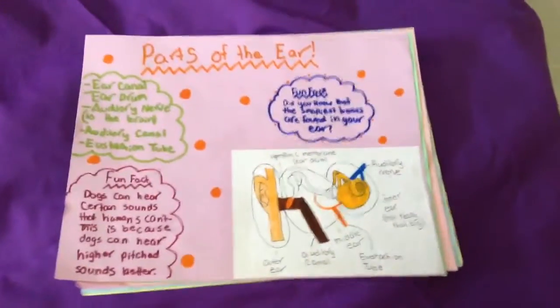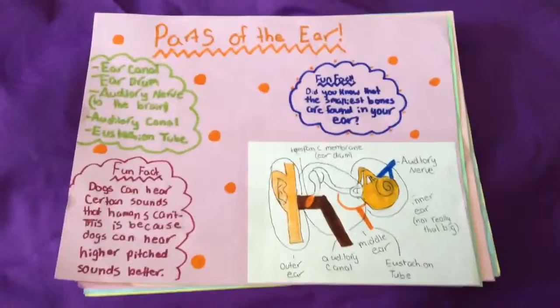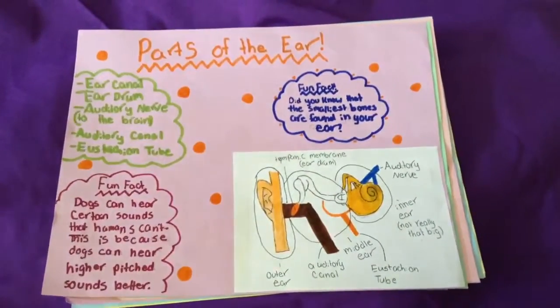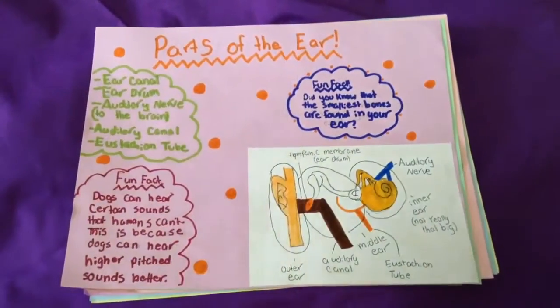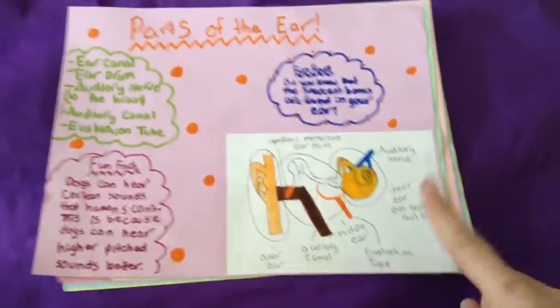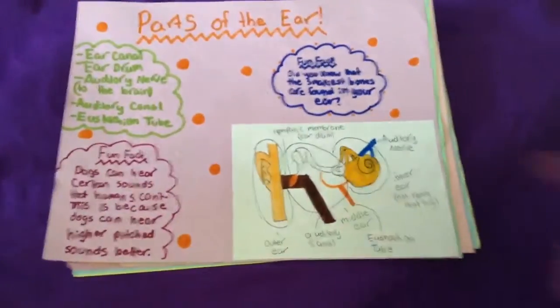Parts of the ear. Some parts of the ear are the ear canal, the eardrum, the auditory nerve, the auditory canal, and the Eustachian tube. There is a diagram of the ear.